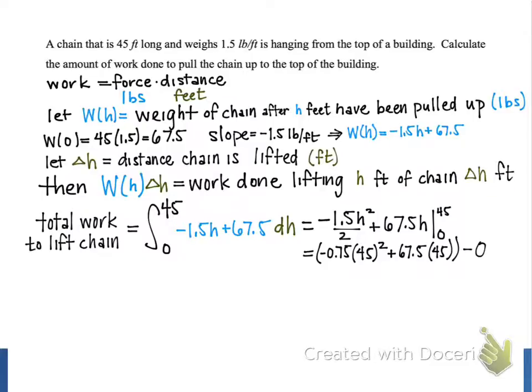Now when we put that first term into our calculator, we get -1,518.75. And then the following term, we're adding 3,037.5. When we simplify the sum of those two terms, our result is positive 1,518.75.